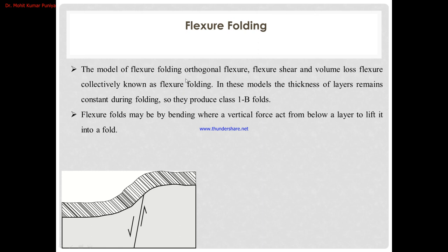The geometry of flexural folds may be explained by three models: orthogonal flexure, flexure shear, and volume loss flexure — collectively known as flexural folding. In all three models, the orthogonal thickness of the layer remains constant during folding, thereby producing Class 1b folds as per Ramsay's classification. Flexural folds may also be bending folds, where a vertical force acts below a layer to lift it into a fold.